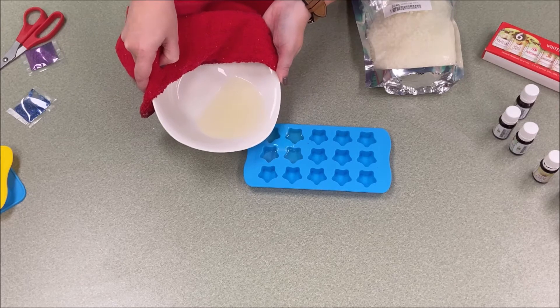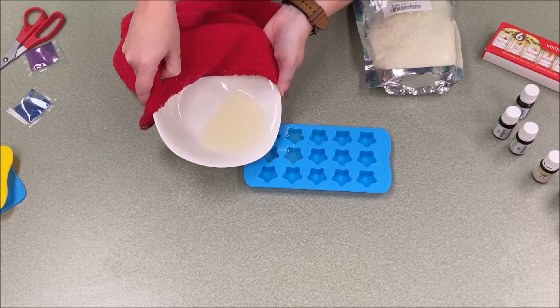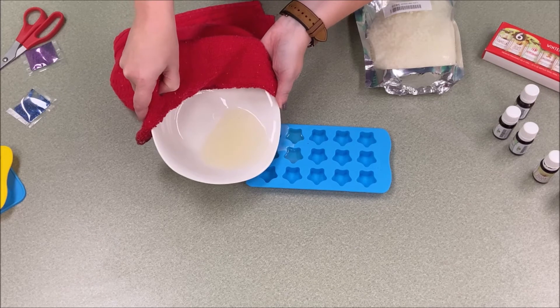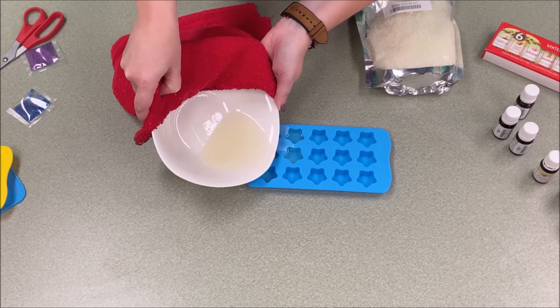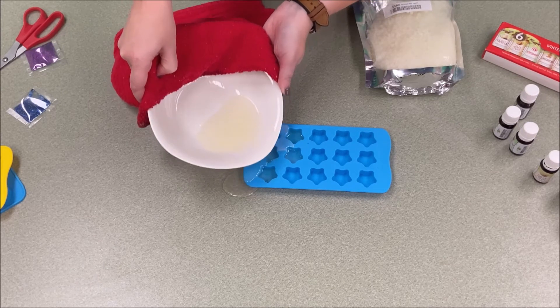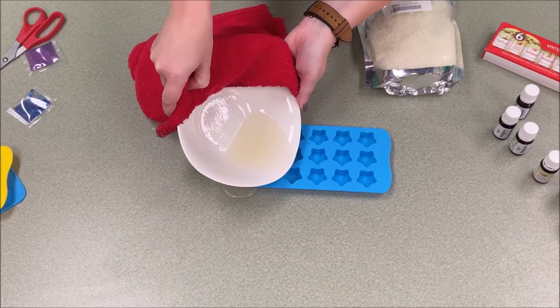And you're just going to pour it into each little container. If it doesn't go on perfect, it doesn't matter. When it dries, it pops out and you can use the knife to just kind of work around the edges and make it that perfect shape. It's not really that hard at all.